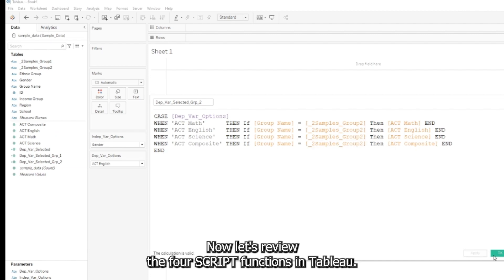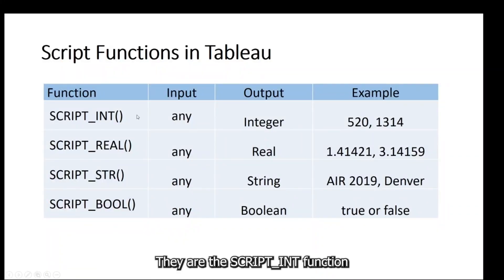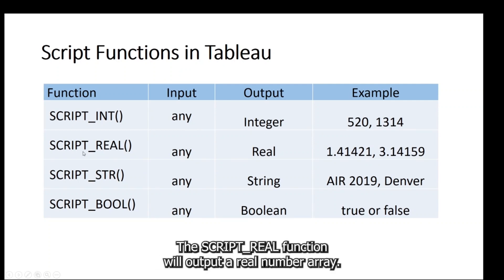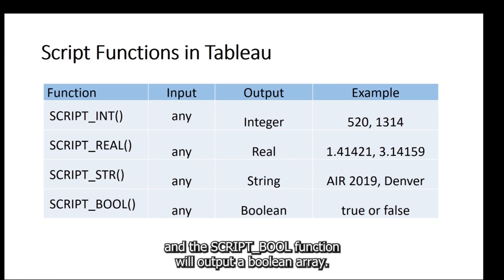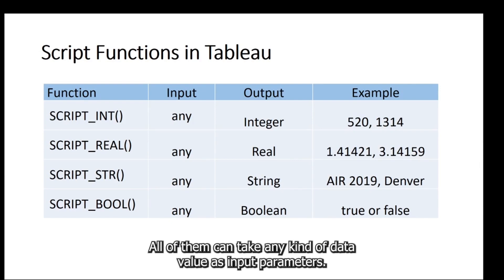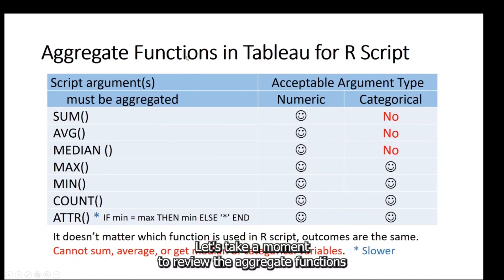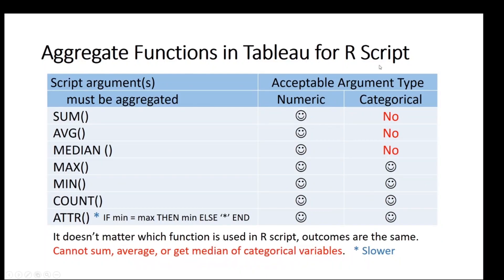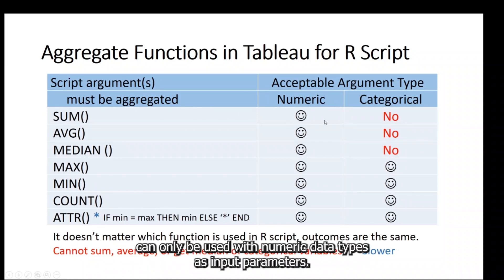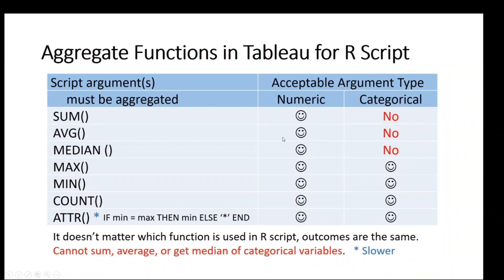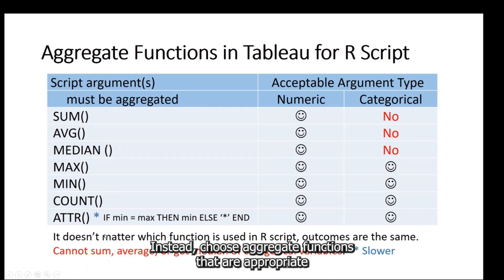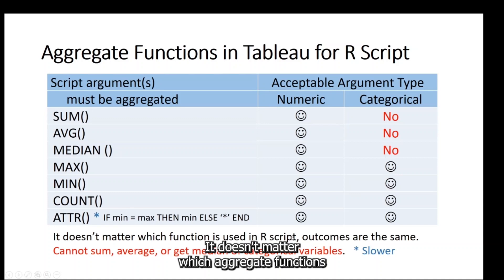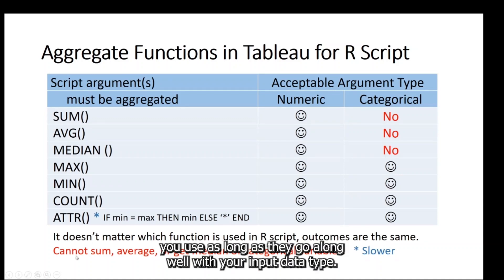Now let's review the four script functions in Tableau. The SCRIPT_INT function outputs an integer number array, SCRIPT_REAL outputs a real number array, SCRIPT_STR outputs a string array, and SCRIPT_BOOL outputs a Boolean array. All of them can take any kind of data value as input parameters. It's important to note that the SUM, AVERAGE, and MEDIAN functions can only be used with numeric data types. If your input data is categorical, choose aggregate functions appropriate for your data type to avoid errors.